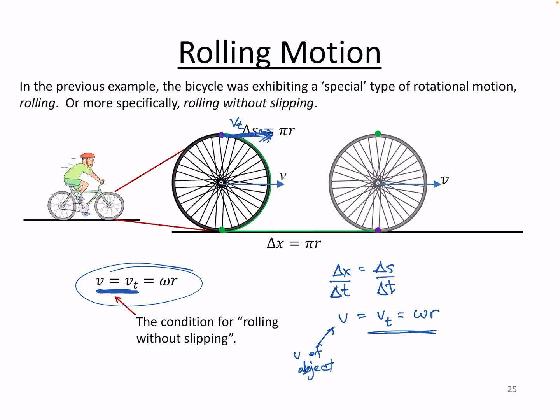Now, this relationship — v equals omega r — is always true. You can have a wheel on ice, pedaling and pedaling, spinning the wheel, but if you have no traction, the velocity of the object would actually be zero, even though you have tangential velocity because you have angular velocity. You just wouldn't have any grip, so you could not roll without slipping. This is the oft-quoted condition for rolling without slipping, though delta x equals delta s is also sufficient.